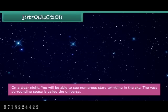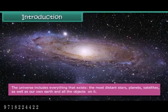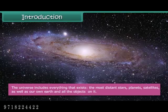On a clear night, you will be able to see numerous stars twinkling in the sky. The vast surrounding space is called the Universe. The Universe includes everything that exists — the most distant stars, planets, satellites, as well as our own Earth and all the objects on it.